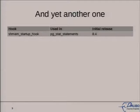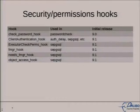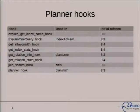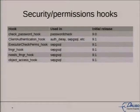There is actually another kind of hook — a fifth category I couldn't put in a specific category — which is the shmem_startup hook. It's a hook that is called when Postgres needs to ask for shared memory from the system. It's used by the pg_stat_statements module to record every query executed in shared memory. As you can see, hooks start with 8.3 and we've got more and more of them through to 9.1.